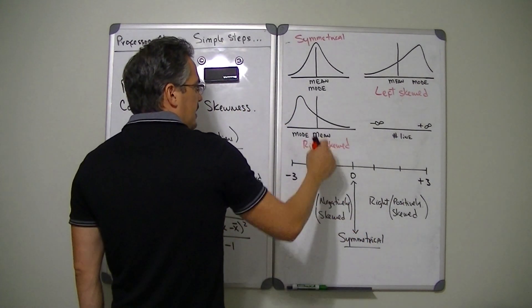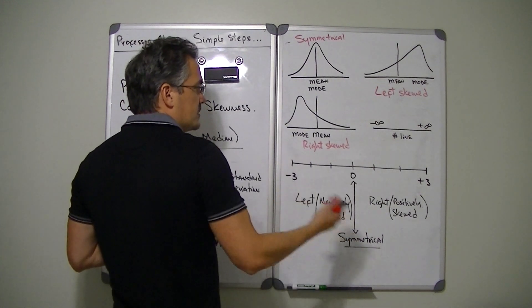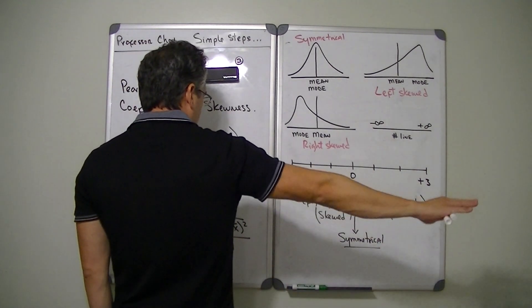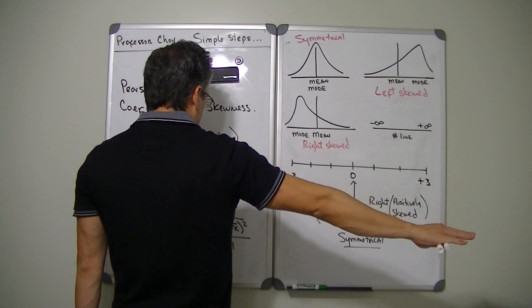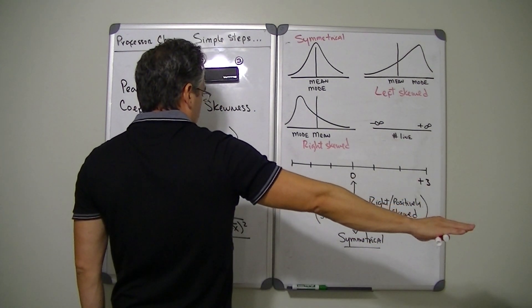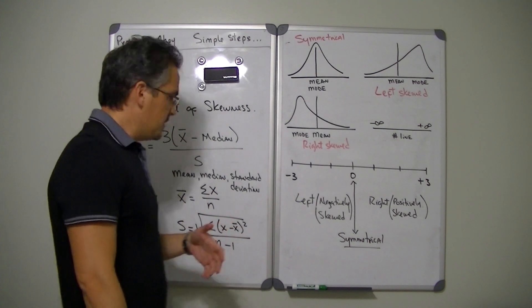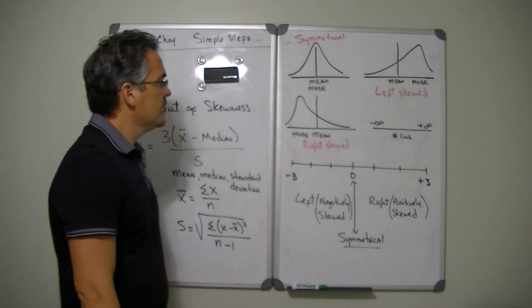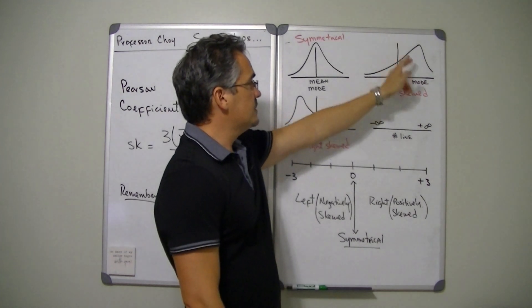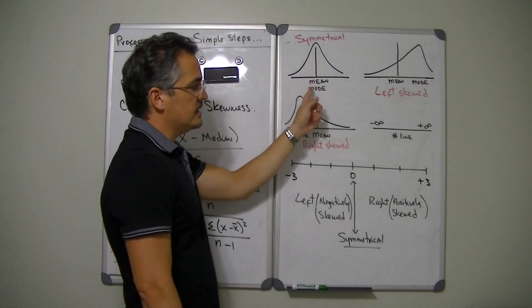Now, if instead the mean is to the right of the mode — or the mode is to the left of the mean — so the mode is your head and the rest of the data extends to the right, then that distribution is right skewed. So: when the mean is to the right of the mode, that's right skewed; when the mean is to the left of the mode, that's left skewed; and when the mean, median, and mode are all in the same position, that's a symmetrical distribution.